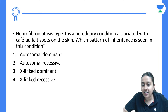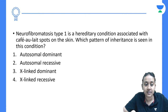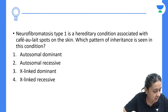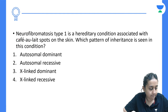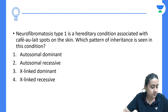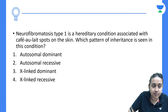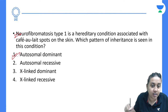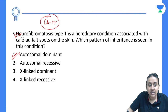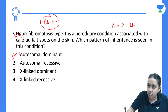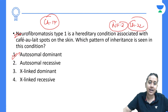Neurofibromatosis type 1 is a hereditary condition associated with café-au-lait spots on the skin. It is an autosomal dominant condition on chromosome 17. Neurofibromatosis type 2 is on chromosome 22.